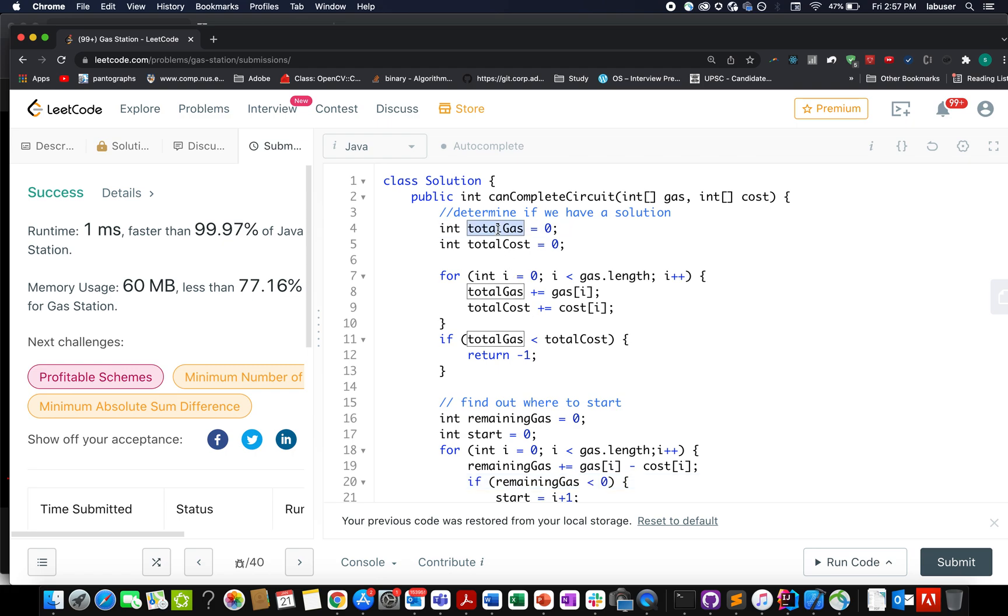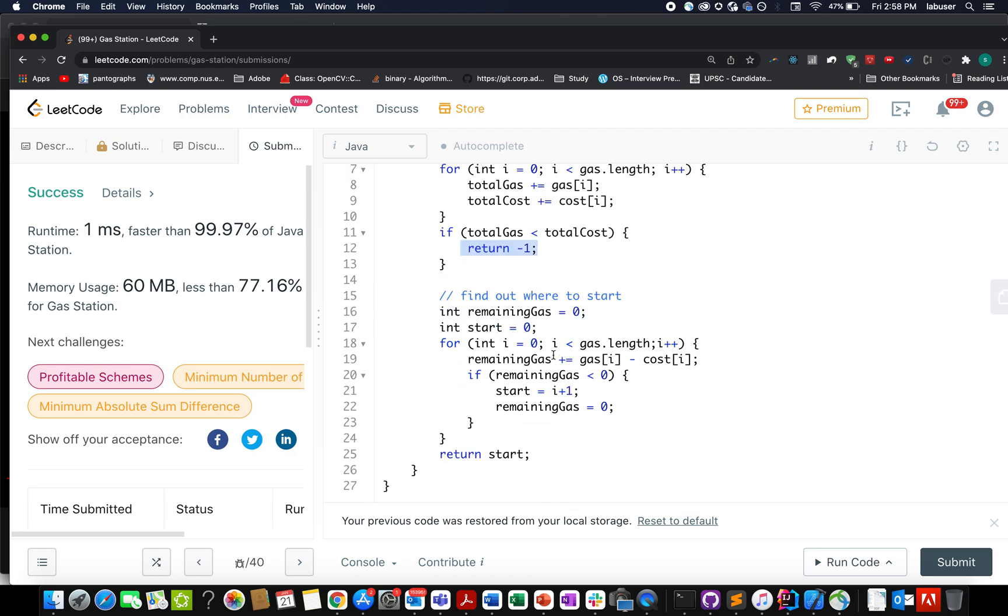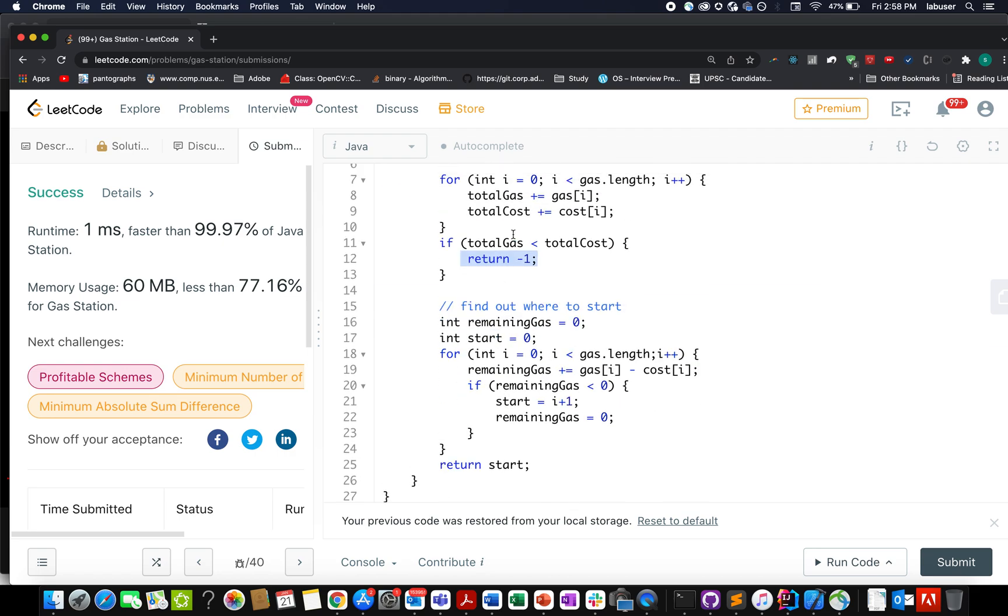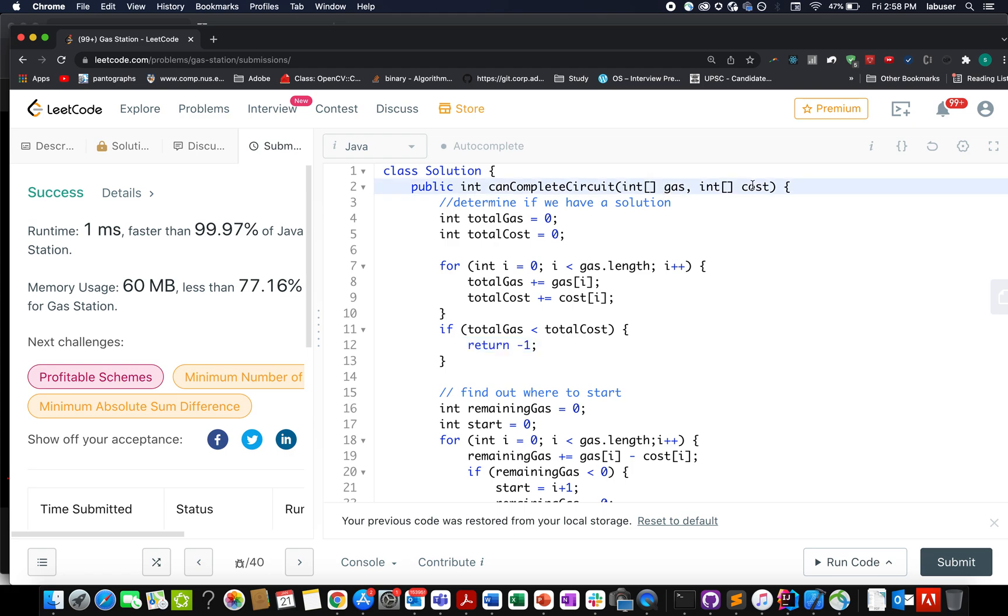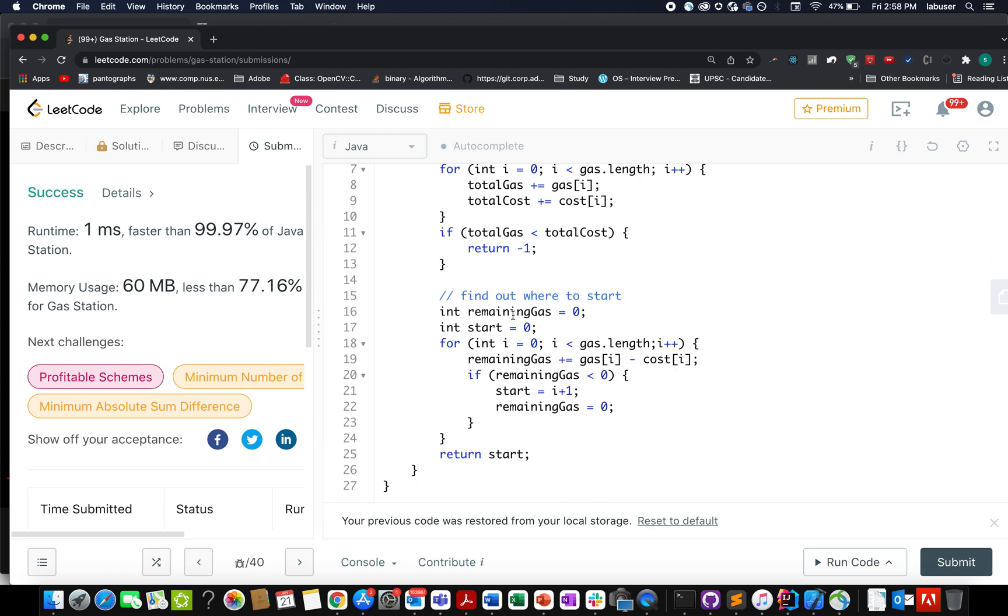Here I've taken two variables, total gas and total cost. So we start the iteration, we iterate over the entire loop. And we update the total gas value and the total cost value that exists in the gas array and the cost array respectively. In case my total cost happens to be greater than total gas, we return minus one in those cases. Because as per this gas and cost configuration, it is not possible.